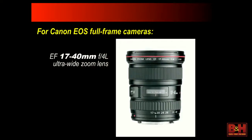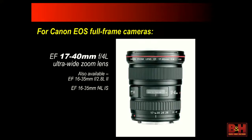For those of you using full-frame cameras like the 5D series, the most affordable entry point in ultra-wide zooms is the 17-40mm f4. We also have two higher-end L-series lenses — the 16-35mm f2.8 with a wide maximum aperture, and the relatively new 16-35mm f4, which is probably the sharpest of the bunch.